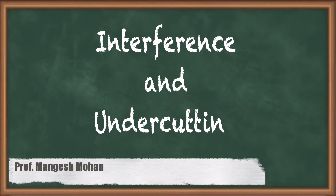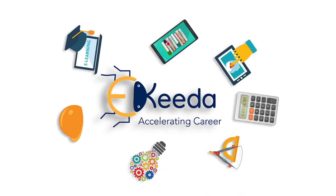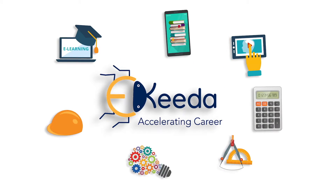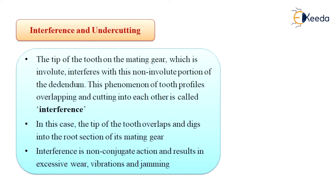Hello students. In this section, let us talk about two important phenomena related to gears: interference and undercutting. A gear tooth has an involute profile only outside the base circle. In fact, the involute profile begins at the base circle.